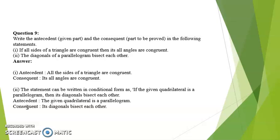Second: the diagonals of a parallelogram bisect each other. First we write this in conditional form: if the given quadrilateral is a parallelogram then its diagonals bisect each other. Now antecedent is the given quadrilateral is a parallelogram, and consequent is its diagonals bisect each other.